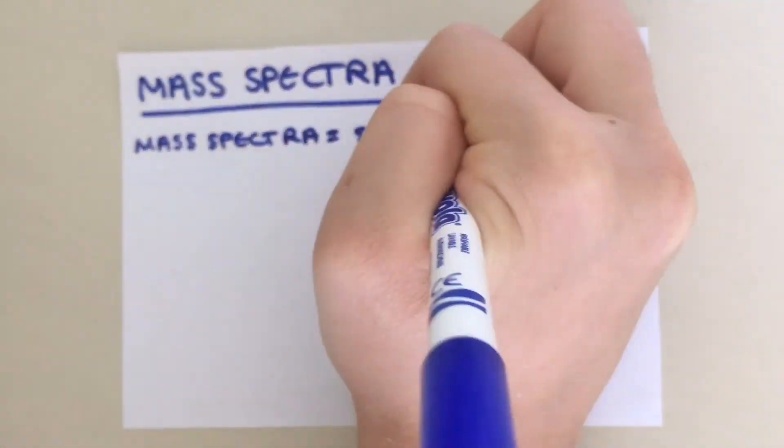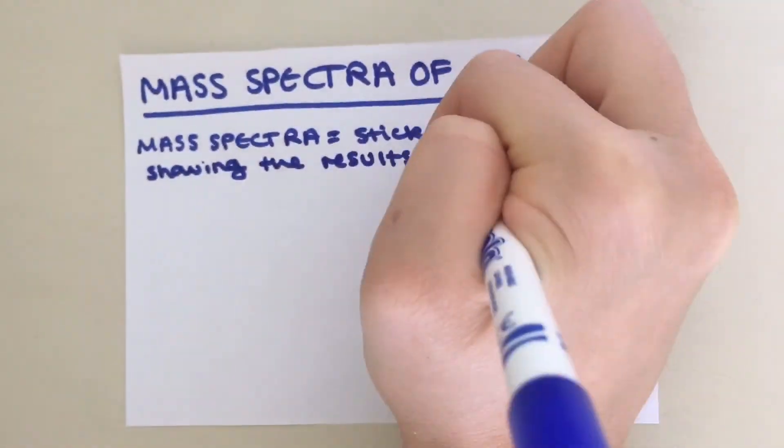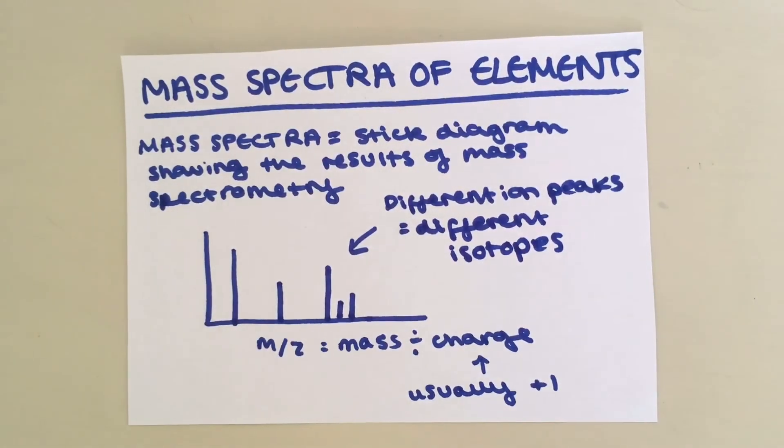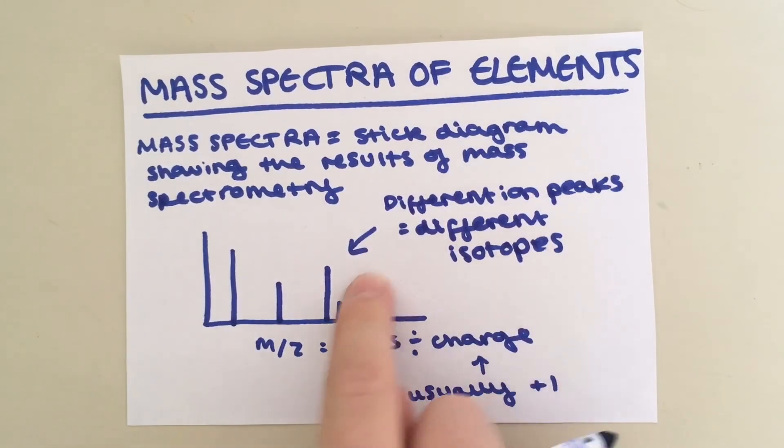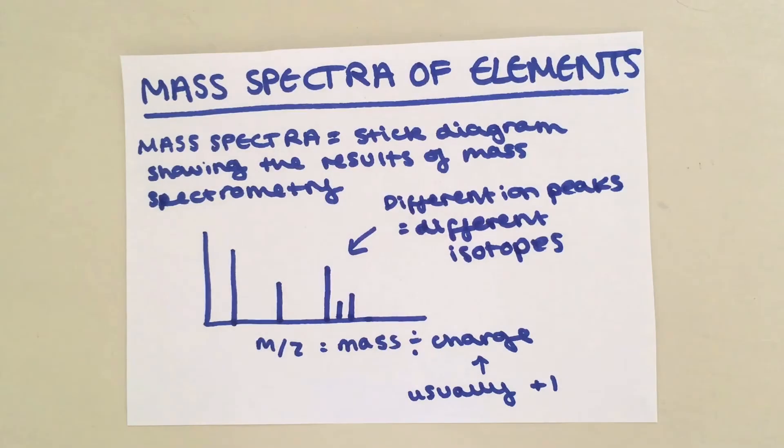A mass spectra is essentially a stick diagram showing the results of mass spectrometry. Here is an example mass spectra with mass divided by charge or m over z on the x-axis. Since the charge of the ion is usually plus one, this axis can be considered as mass. However, it is not always the case and the charge could be plus two. If a number of lines are present on a mass spectra of an element, this means that there are different isotopes of that element. I forgot to include it on the diagram, but the y-axis is relative abundance of each of those isotopes, percentage-wise.